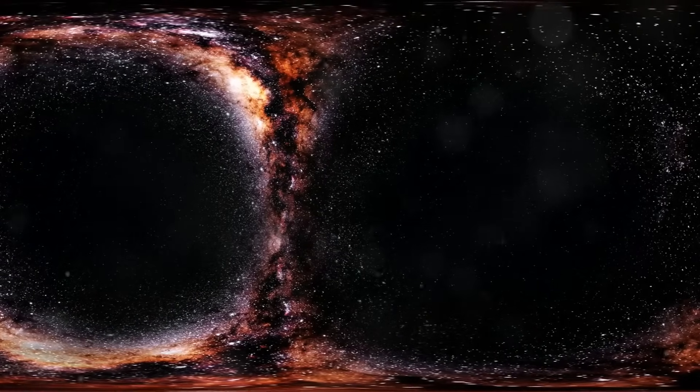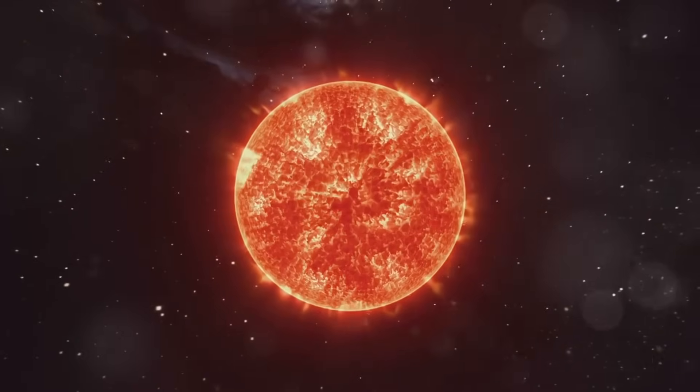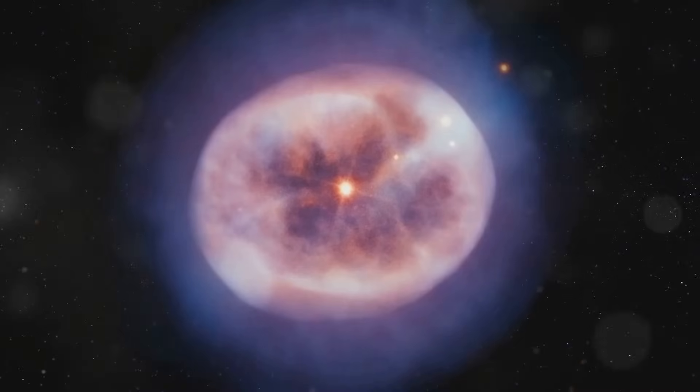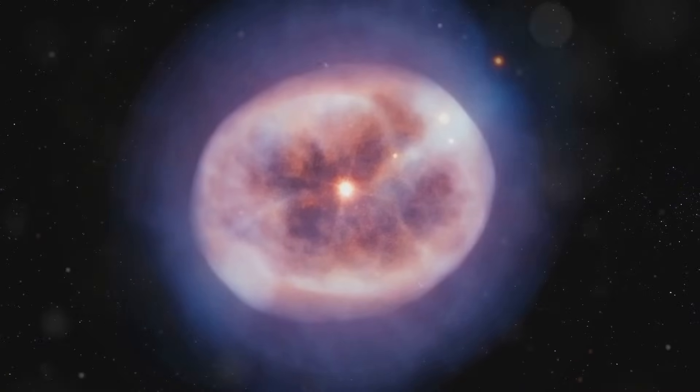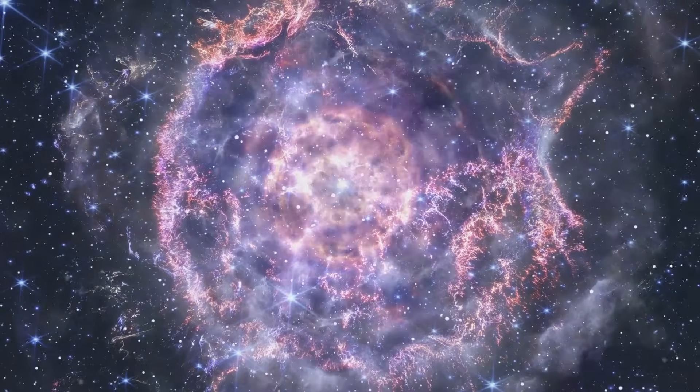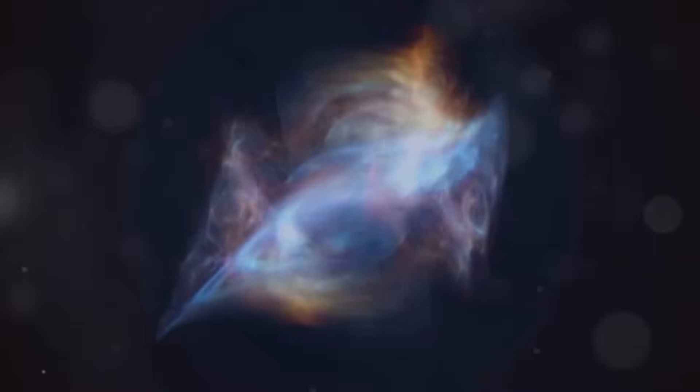Stars traverse life cycles shaped by mass. Ordinary stars, such as our sun, evolve into red giants and eventually shed outer layers, creating planetary nebulas. Massive stars impress with swift lifespans, culminating in supernovae that spew heavy elements, key nutrients for new celestial generations.